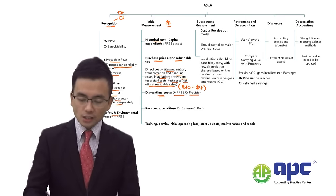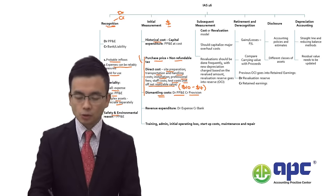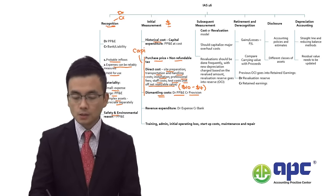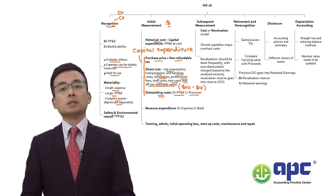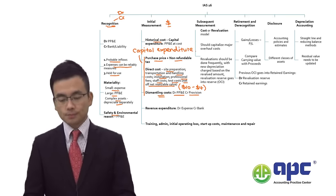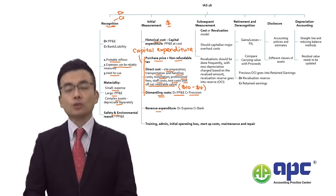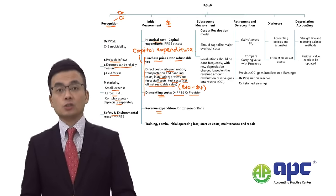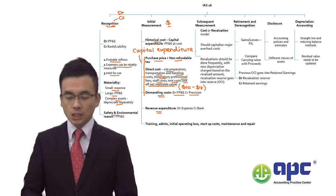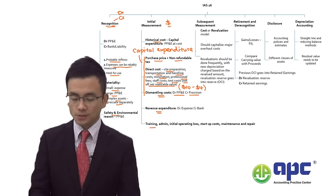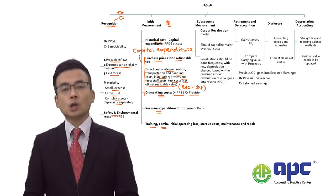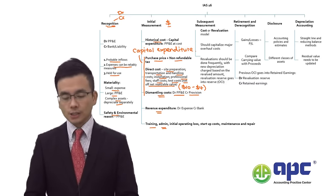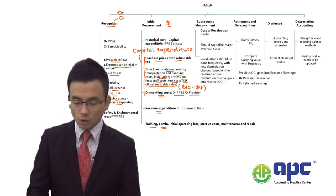These are capital expenditures, recognized as part of PP&E at cost. For revenue expenditure, we simply expense those into the statement of profit or loss — including training expenses, admin expenses, and staff salary costs. Initial operating losses before launching the factory or shop also fall under this category.